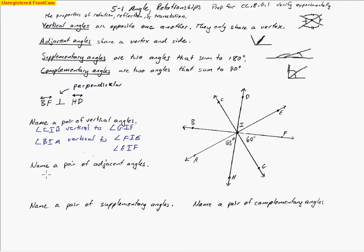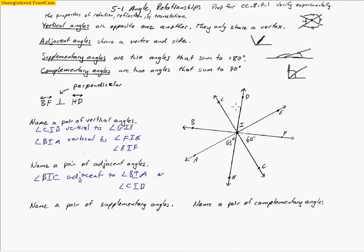Now let's look at some examples of adjacent angles. Adjacent angles share a side, so let's start with angle BIC. They have to share a side, so I could do angle BIA or angle CID. So BIC was the original angle — either angle CID or angle BIA would be adjacent to that original angle.